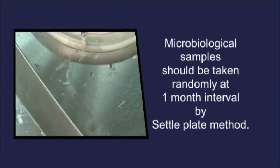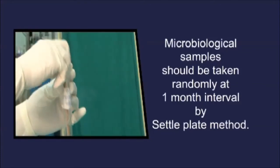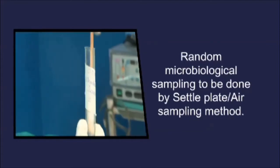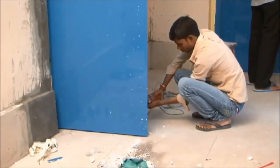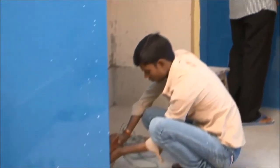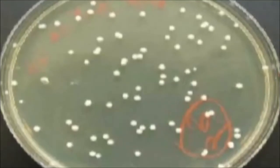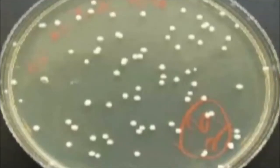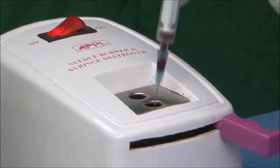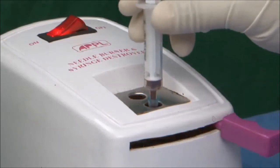Quality control: microbiological samples should be taken randomly at one-month intervals by the settle plate method. Random microbiological sampling should also be done by settle plate or air sampling method following construction, renovation work, or any infectious outbreak. Any colony of fungus or Staphylococcus aureus needs to be reported. If found positive, servicing of the air handling unit and/or AC duct is recommended. There should be arrangements for disposal of biomedical and other wastes in accordance with national and state regulations.